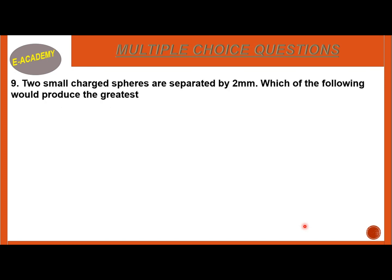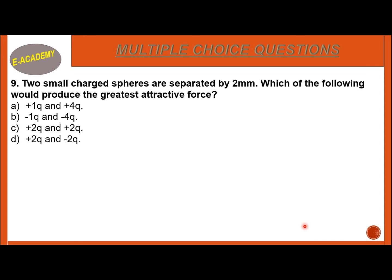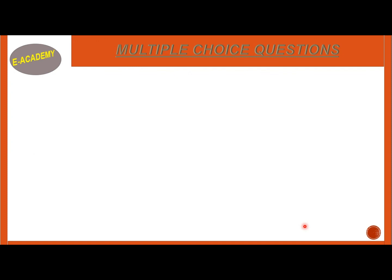MCQ Number 9: Two small charges are separated by 2 mm. Which of the following would produce the greatest attractive force? Options: +Q and +4Q, -1Q and -4Q, +2Q and +2Q, +2Q and -2Q. The correct option is D, +2Q and -2Q.